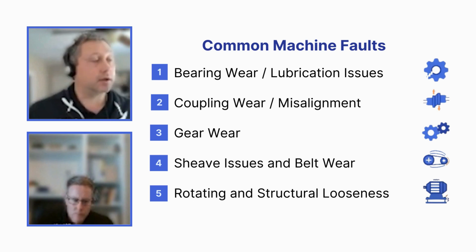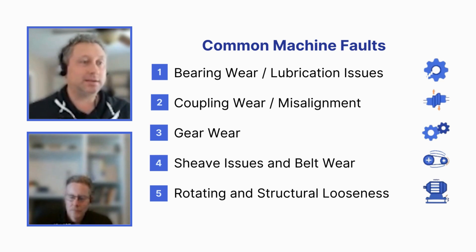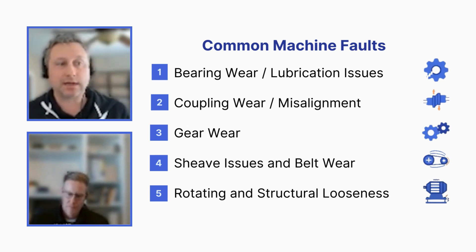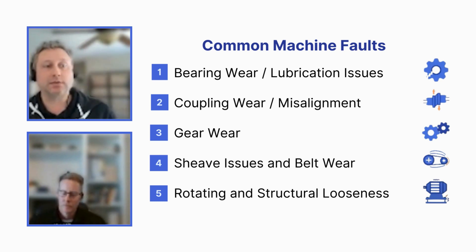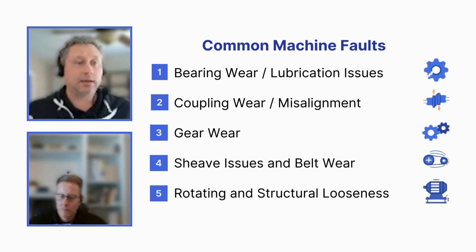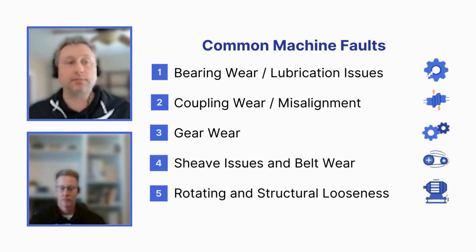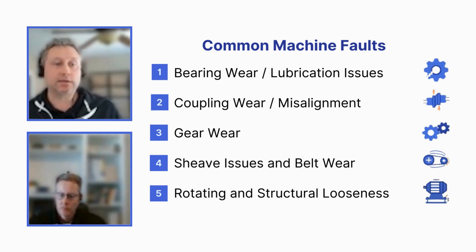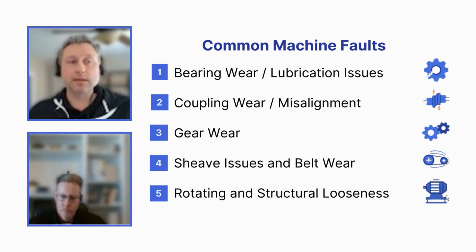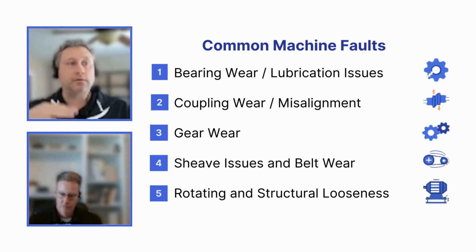The last common fault types are rotating and structural looseness. These have very similar names but are actually very different in nature. Structural looseness — also called Type A looseness — is what most people think of: a loose bolt or weakness in the foundation, caused by broken hold-down bolts, worn grout, etc. Type A structural looseness shows up in the spectrum as very high vibration in only one direction — for instance, horizontal vibration 10 times higher than vertical vibration.